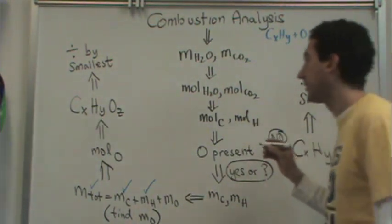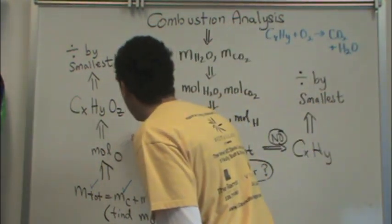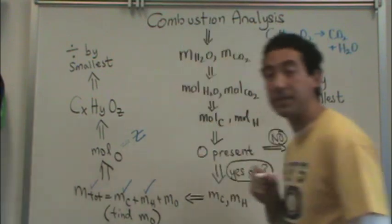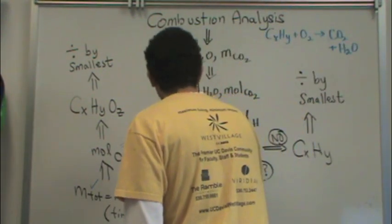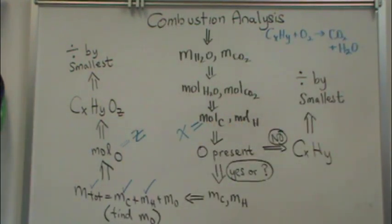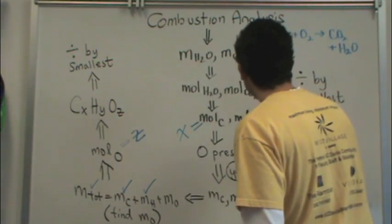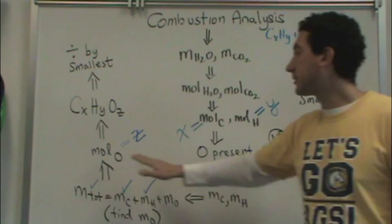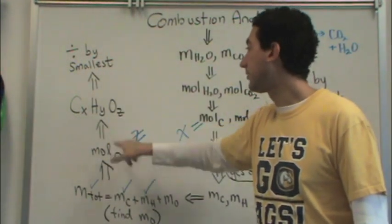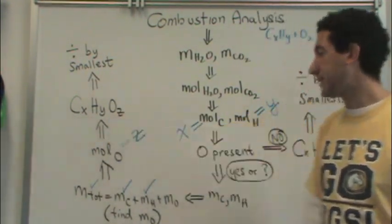And just to clarify here, the moles of oxygen is Z. The moles of carbon, that's X. And the moles of hydrogen, that's Y. So really, the subscripts X, Y, and Z are just moles. That's true for X and Y. But in case there's a Z or there's oxygen, then you'll have to find the moles of oxygen, that's Z.